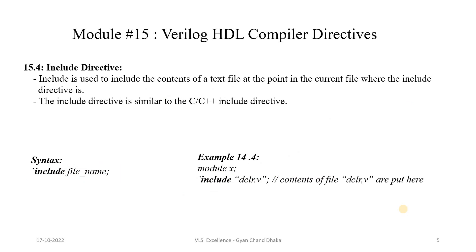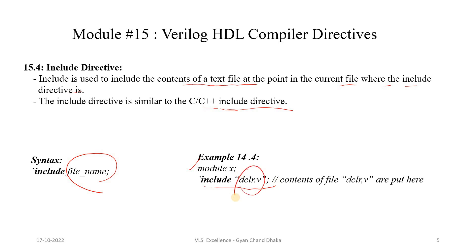The next important compiler directive is the include directive. `include is used to include the contents of a text file at the point in the current file where the directive appears — similar to the C or C++ include directive. The syntax is `include followed by the filename. For example, inside module ux, using `include will paste all the contents of the specified file at that position.